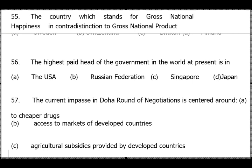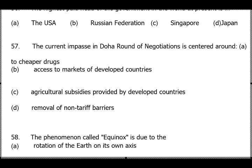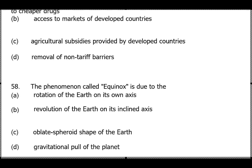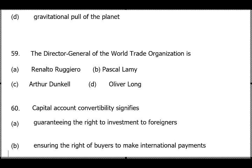Question 57: The current impasse in the Doha Round negotiations — answer is option C: agriculture subsidies provided by developed countries. Question 58: The phenomenon called equinox — you should know the dates. Equinox happens because of Earth's revolution on its inclined axis; it occurs twice a year: 20th March and 22nd September.